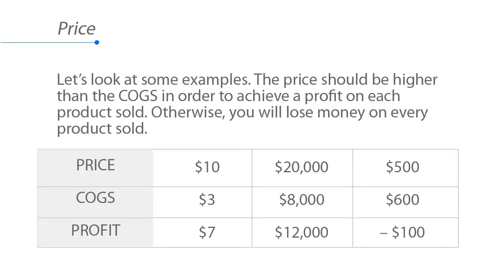Let's look at some examples. If the price of a product is $10 and the cost of goods sold, or COGS, is $3, then our profit is $10 minus $3, which is $7.